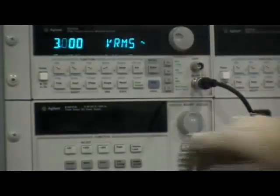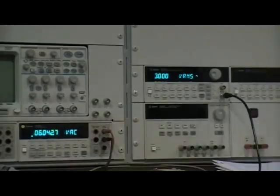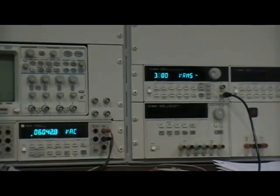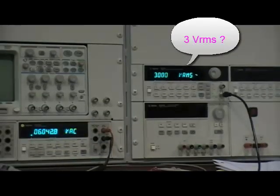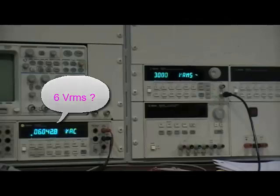Now connect the function generator to the digital multimeter. The digital multimeter reads 6 volts RMS. Which one is the correct value? 3 volts like the display or 6 volts like the DMM reads? To understand this,